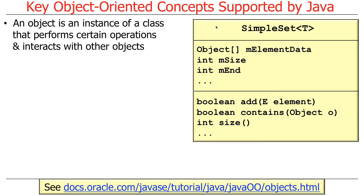An object is an instance of a class. The way to think about it is like the class is kind of like the cookie cutter, and an object is like a cookie — you make the cookie out of the cookie cutter. The class is really the key thing; it should probably be called class-oriented programming, because it's basically a blueprint that describes how to make things. It has operations and state, and it is used to interact with other objects.